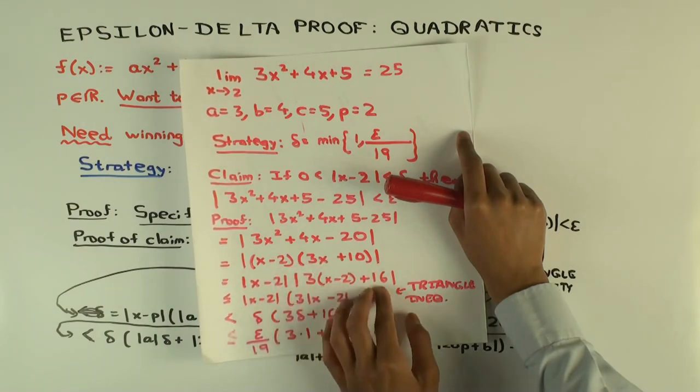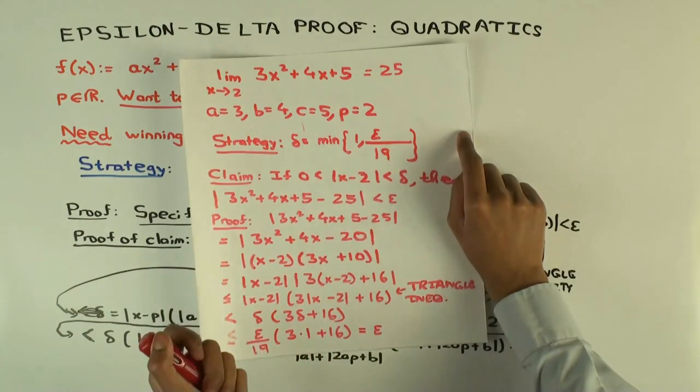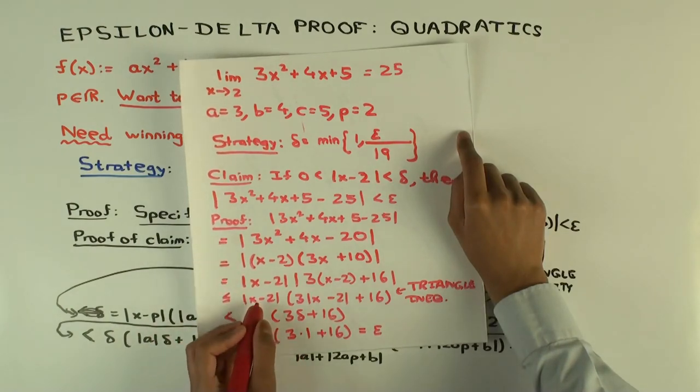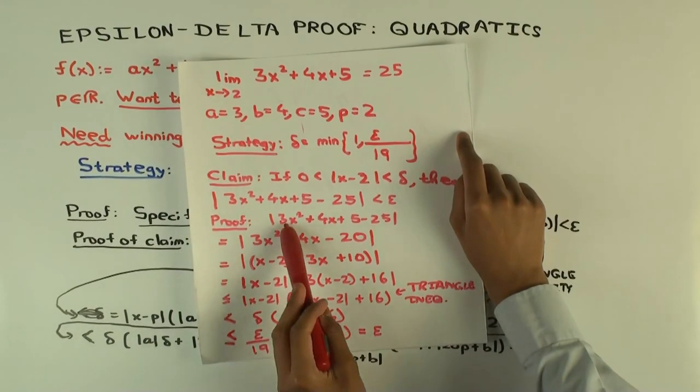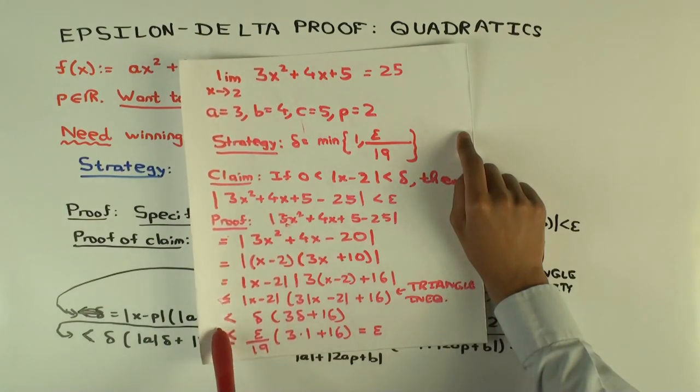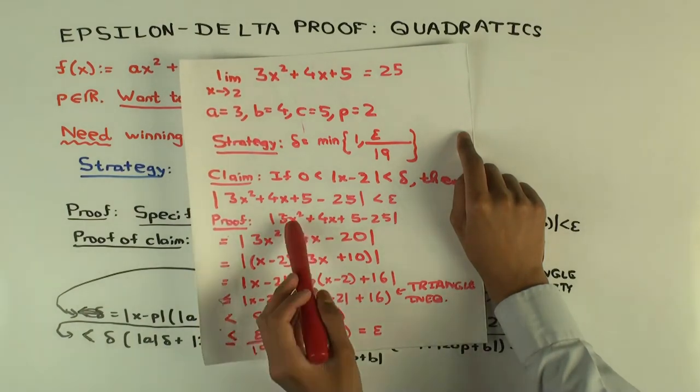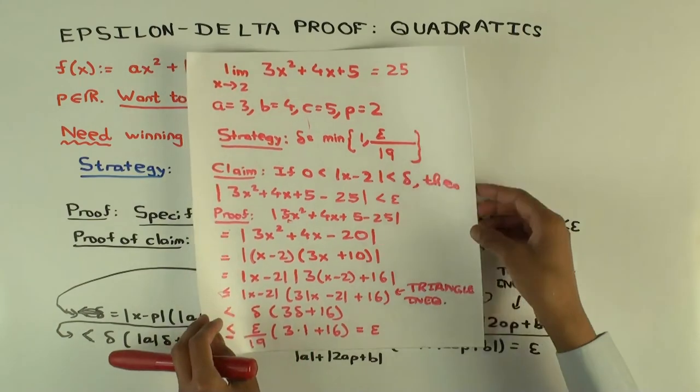Then you can figure out the other one by inspection, and for the other factor you rewrite it as something times x minus p plus something. Then you do this triangle inequality business. You may replace them both by delta, the outer delta you replace by epsilon over something, and the inner delta you replace by one. We have a chain of inequalities, and the overall thing is therefore strictly less than epsilon because there's one strict less than here.